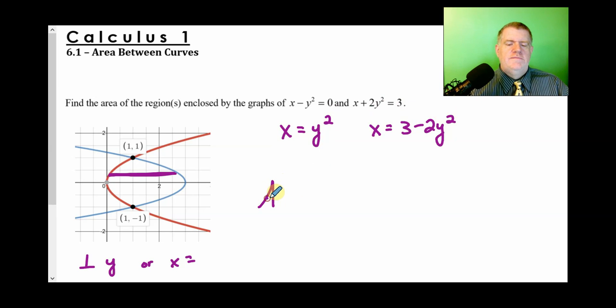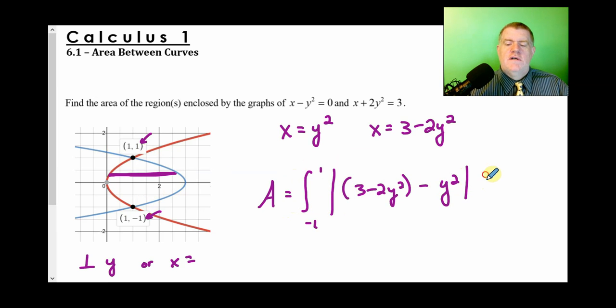The area is going to equal between negative 1 and 1 because those are our y values, negative 1 and 1. The absolute value, that way we don't worry about putting it in the right order because, you know, sometimes I just mess up that way. This graph here, the blue graph, which should be 3 minus 2y squared. As I say, I'm not really concerned about it because if it's not right, it doesn't matter. Minus the red graph, which is y squared dy. That's how you set it up. And interestingly enough, this area actually has the whole number of 4. All right.